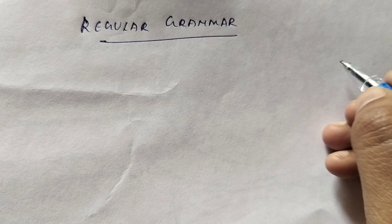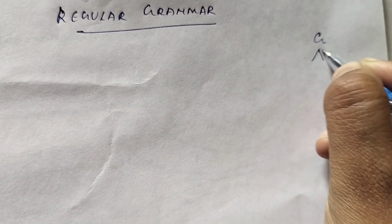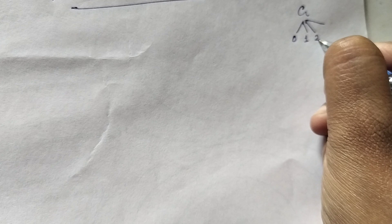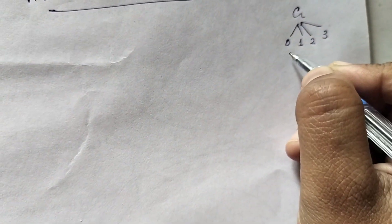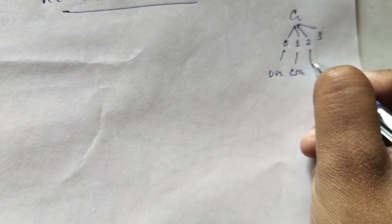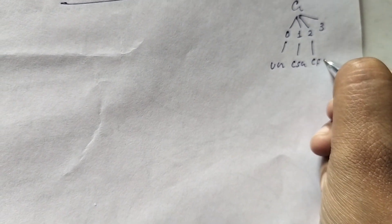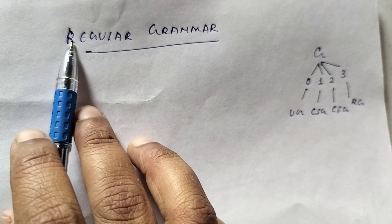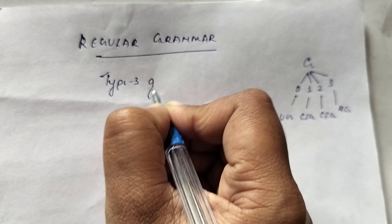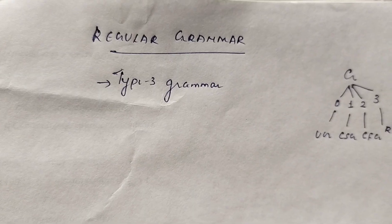This video is about regular grammar. In the previous video we discussed the Chomsky hierarchy, according to which grammar is divided into four types: type 0 grammar (unrestricted grammar), type 1 grammar (context sensitive grammar), type 2 grammar (context free grammar), and type 3 grammar, which is regular grammar.